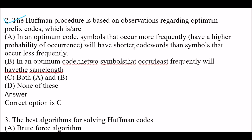Next question: The Huffman procedure is based on observations regarding optimum prefix codes. Option A: in an optimum code, symbols that occur more frequently will have shorter code words than symbols that occur less frequently. Option B: in an optimum code, two symbols that occur least frequently will have the same length. Option C: both A and B. Option D: none of these. The right answer is Option C, both A and B.